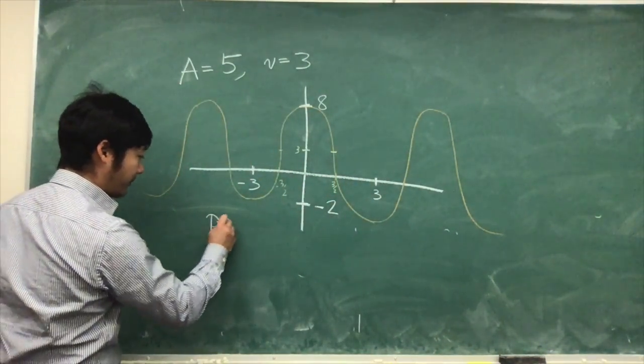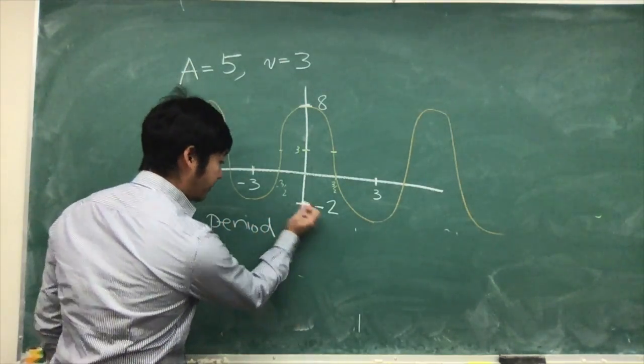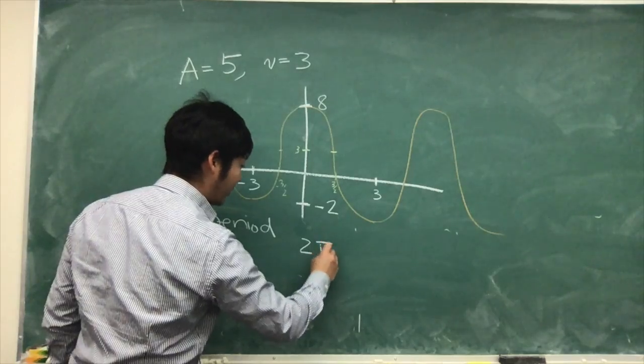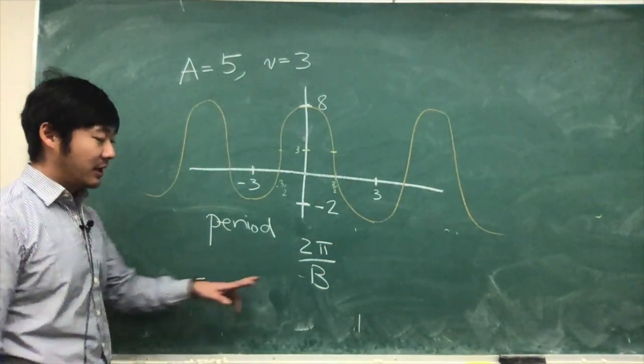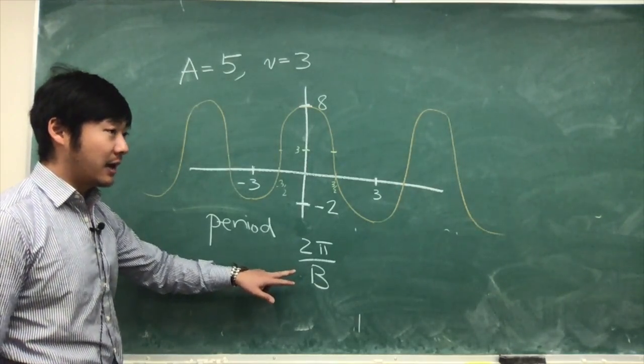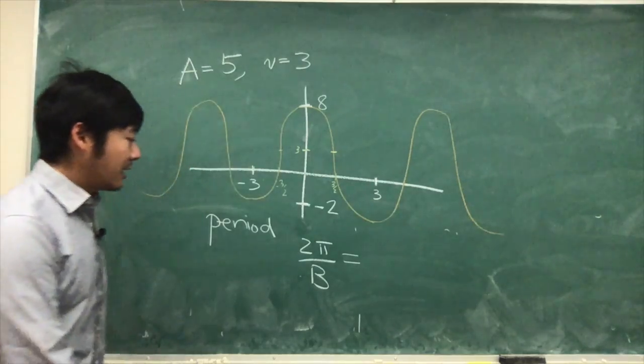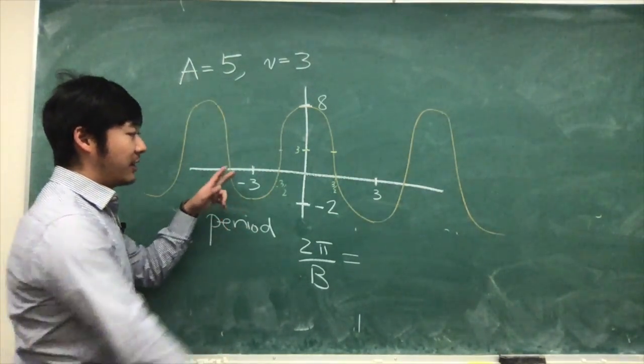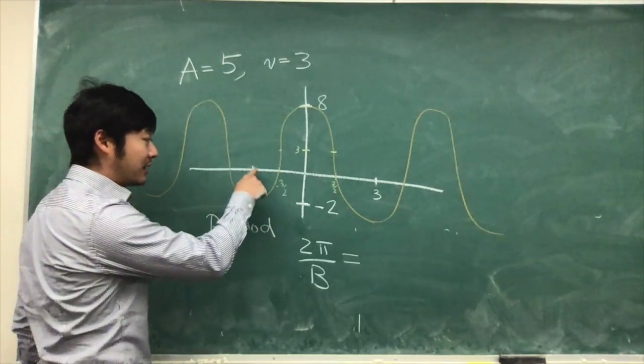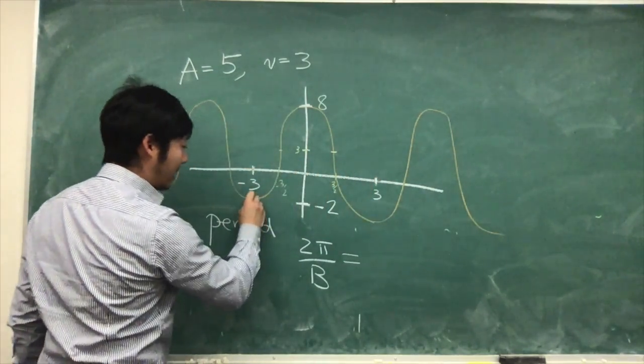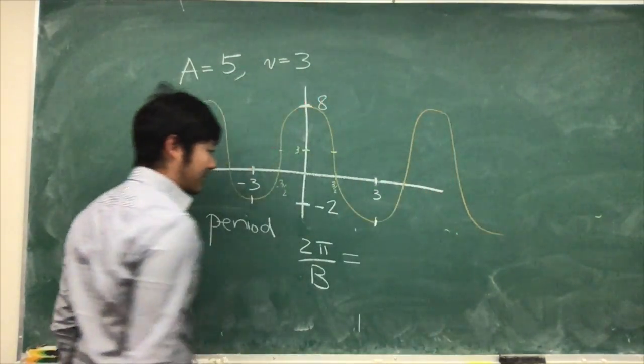The period. As some of you have noted, the b in front of the sine or cosine is 2π over b, which equals the length. For this one, the length is from negative 3 to 3. That is the length from peak to peak.